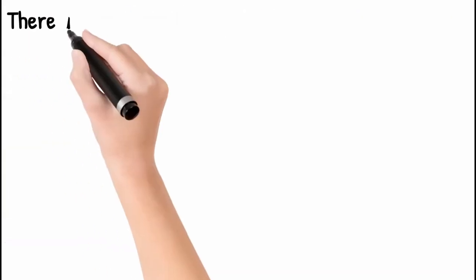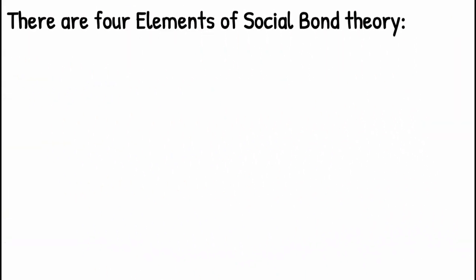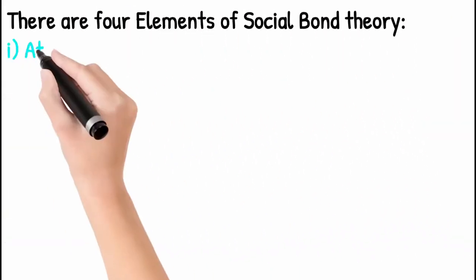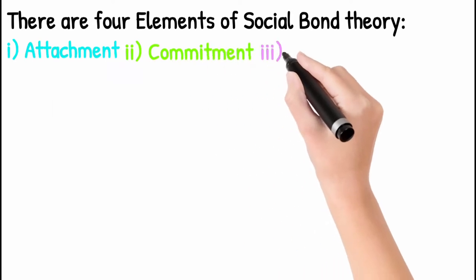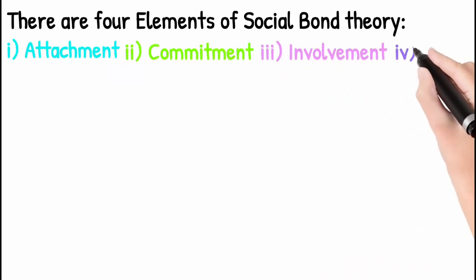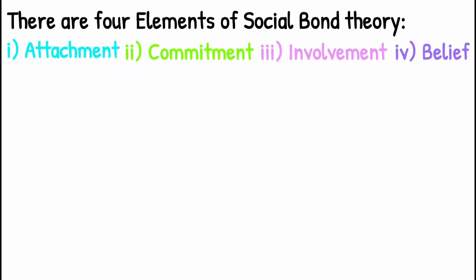There are four elements of Social Bond Theory. Number one: Attachment. Number two: Commitment. Number three: Involvement. Number four: Belief.